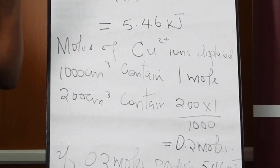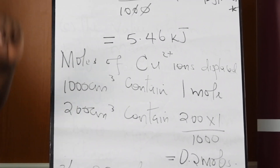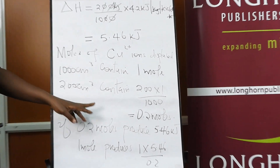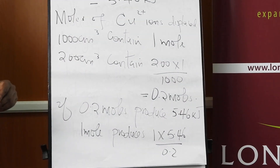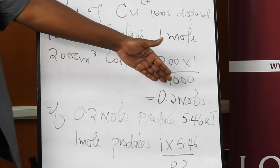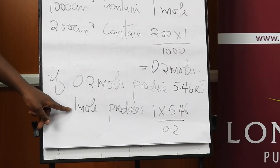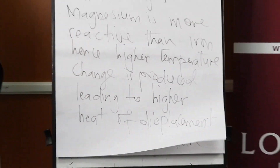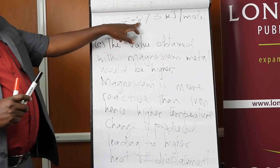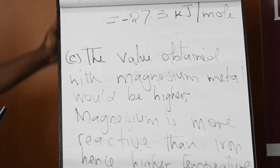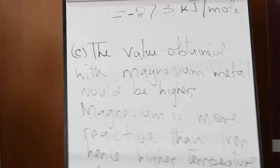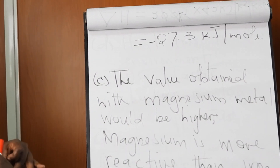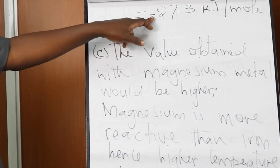To find the heat of displacement — energy per one mole of ions — we need the number of moles of copper ions displaced, calculated from the volume and molarity. Then: if those moles produced that amount of energy, what about one mole? Working this out gives 27.3 kJ/mol. Since the temperature rose, the reaction is exothermic, so you assign a negative sign.